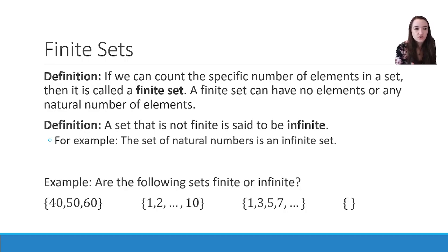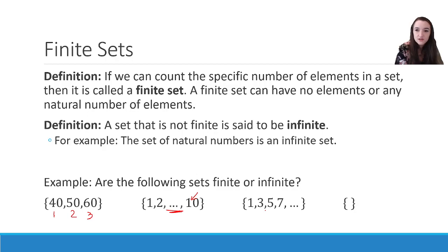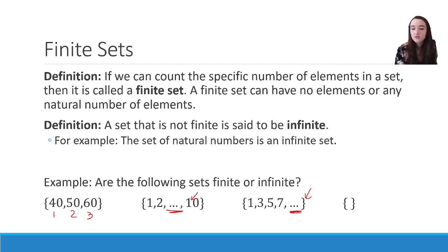Looking at these different roster notations, which would be infinite and which would be finite? The set {40, 50, 60} — I can count the elements: 1, 2, 3. That's finite. A set like {1, 2, 3, ..., 10} has an ellipsis in the middle but still has an endpoint, so there are 10 total elements — finite. But a set written as {1, 2, 3, ...} with an ellipsis and no stopping point says the pattern continues forever. That's infinite, because even though I can count 1, 2, 3, 4, I'd technically have to keep counting and I'd go on forever.